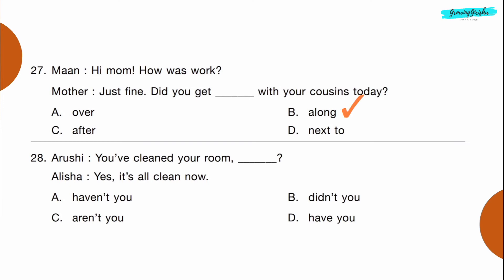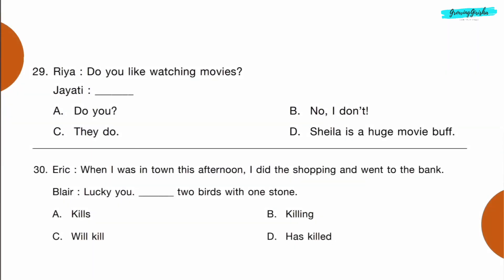Question 28 — Arushi: You've cleaned your room dash, Alicia? Alicia: Yes, it's all clean now. Option A: haven't you.